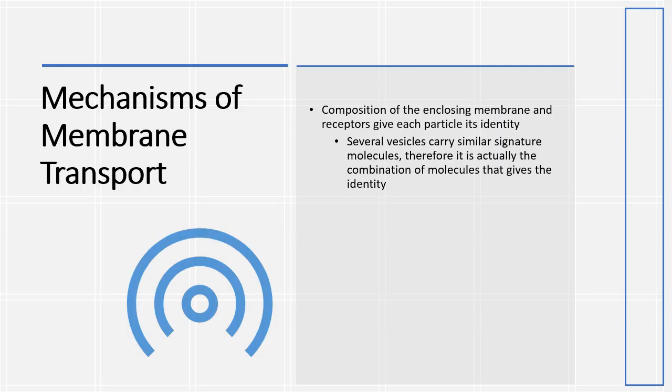Composition of enclosing membrane and receptors give each particle its identity. Several vesicles carry similar signature molecules. Therefore, it is actually the combination of molecules that gives the identity.